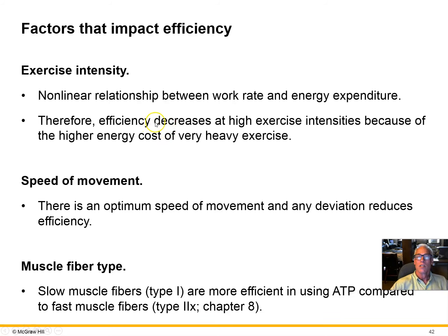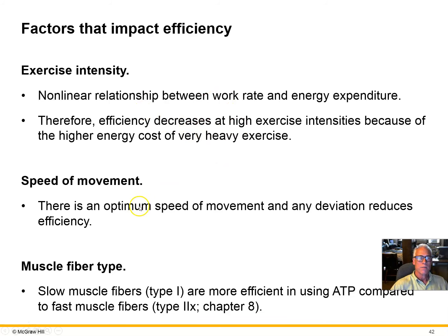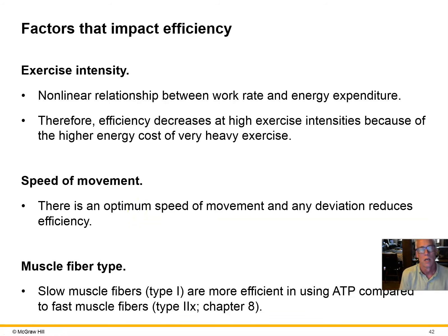What are some things that affect energy efficiency — the amount of energy we can convert to external work? Exercise intensity has a nonlinear relationship with efficiency. As you continue to increase exercise intensity, efficiency begins to go down. Very heavy exercise is not very efficient — we're losing more and more energy from the body as heat relative to how much external work we're doing.